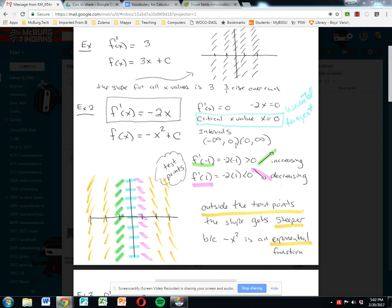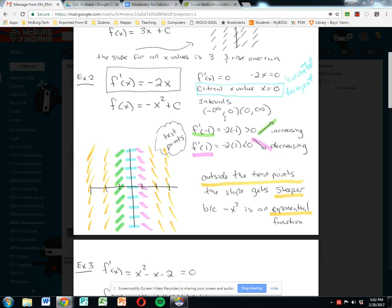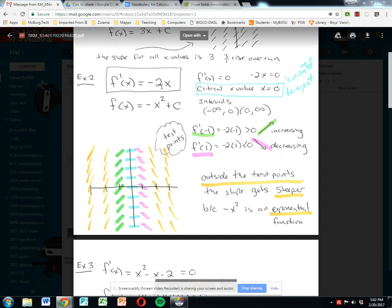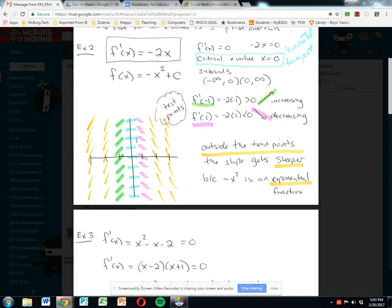We can do what we did with increasing and decreasing intervals before. We let that critical point determine our interval: negative infinity to 0 and 0 to infinity. If we pick test points - I pick -1 and +1 - and plug them into the derivative, we find that the derivative is positive anywhere left of 0, and negative anywhere right of 0.